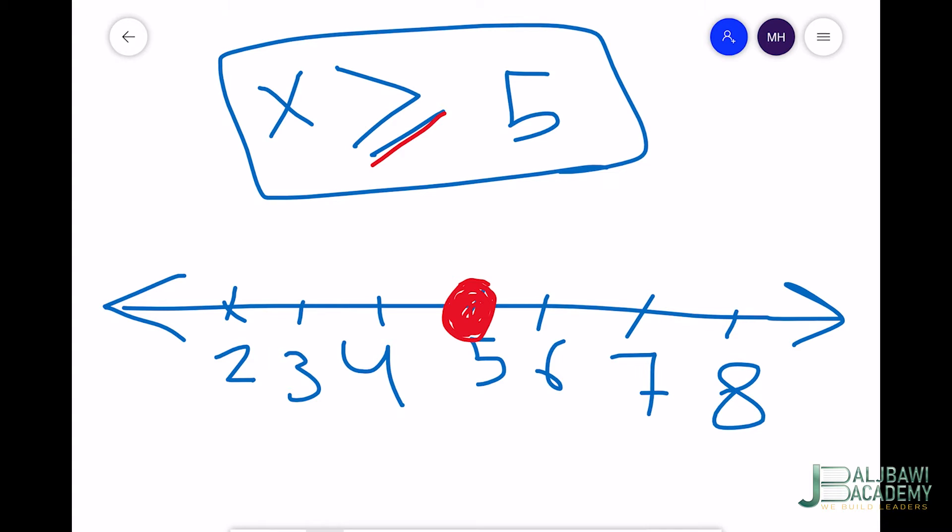Now I choose some points or values which can be solutions. x greater than or equal to 5 means 6 can be a solution. Then I shade these values here.